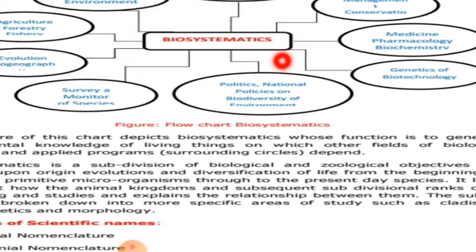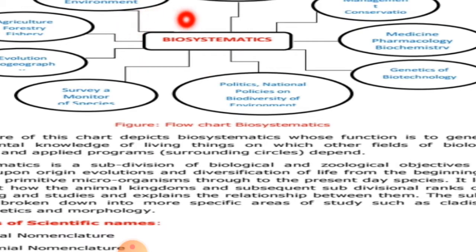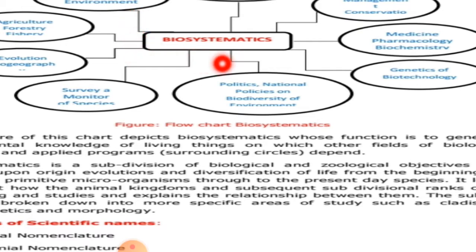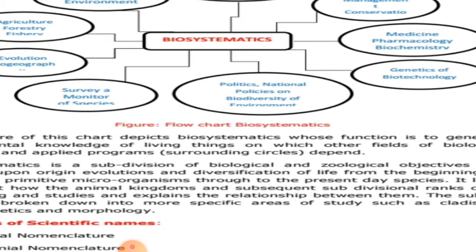بہت ساری فیلڈز biosystematics سے جوڑی ہوئی ہیں۔ یعنی center of these is biosystematics۔ اس طرح ہم کہہ سکتے ہیں کہ biosystematics کی بہت importance ہے کیونکہ اس کا فیلڈ بہت وسیع ہے اور یہ تمام میڈیسن، جینیٹکس، انوائرنمنٹ، اور ایگریکلچر کے ساتھ جوڑا ہوا ہے۔